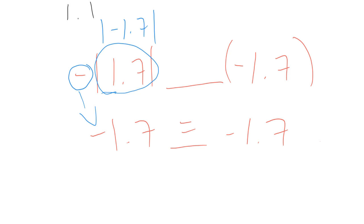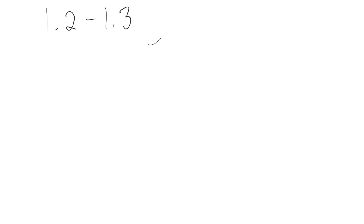That's 1.1. Now let's do 1.2 and 1.3 together. Remember the difference between an integer and a rational number. Rational numbers are any numbers that can be written as a fraction — positive or negative, and can also be a whole number. Integers are whole numbers — no decimals, no fractions — but they can be positive or negative. Sections 1.2 and 1.3 cover adding integers and adding rational numbers, and since rational numbers includes integers, I'll show you how to do both together.